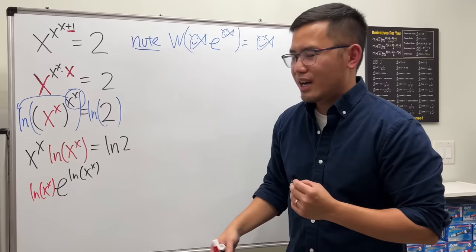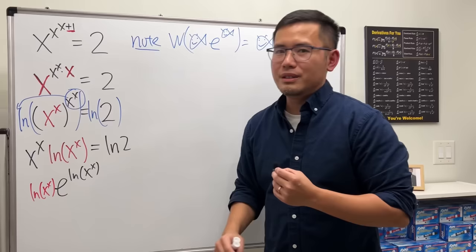You see, this fish and that fish are the same now, and we also have the number e. Of course, the right-hand side, we still have that nice ln 2. Now we are ready.